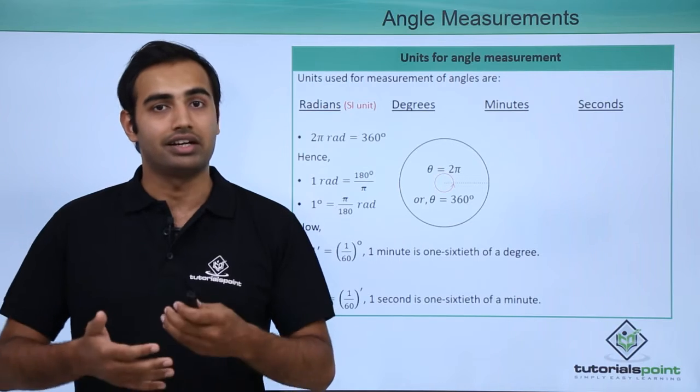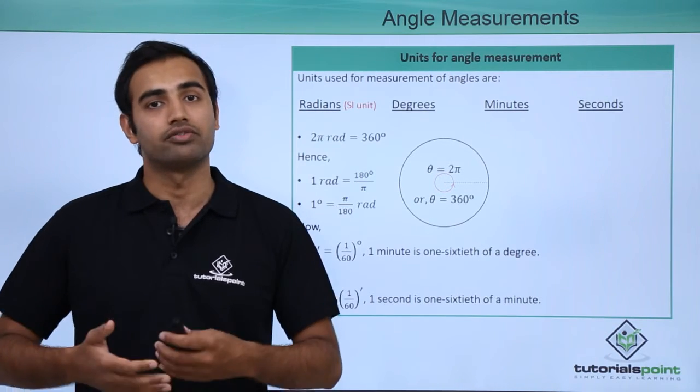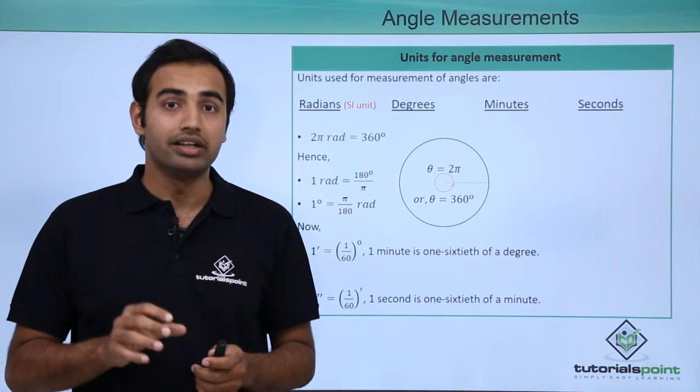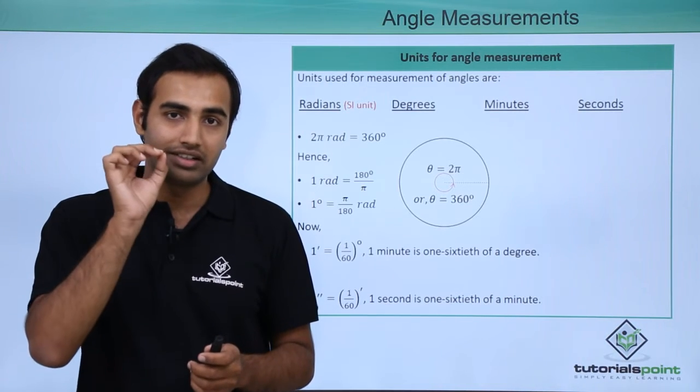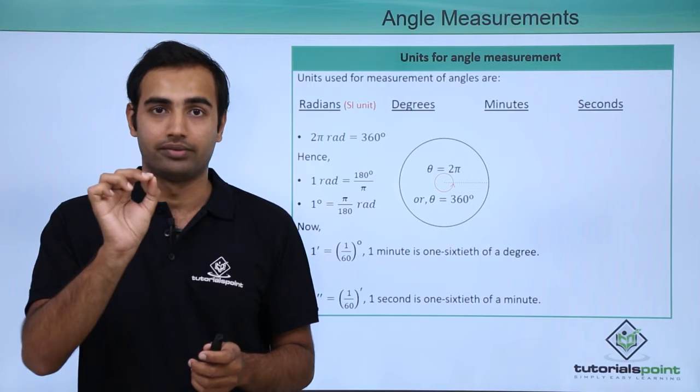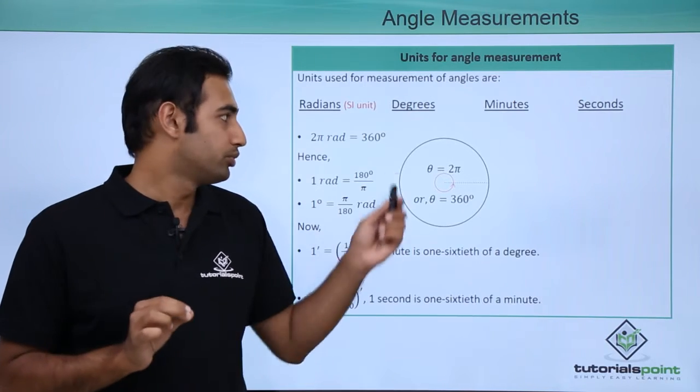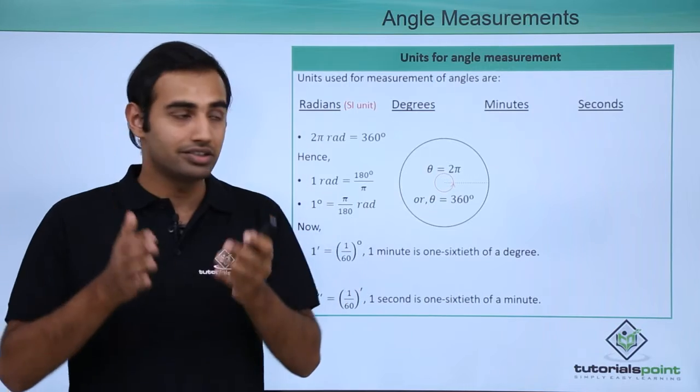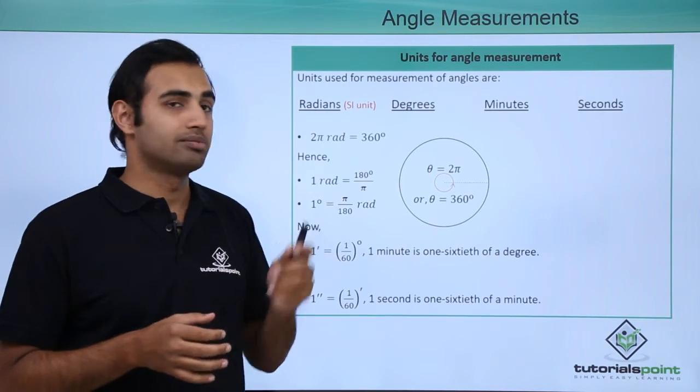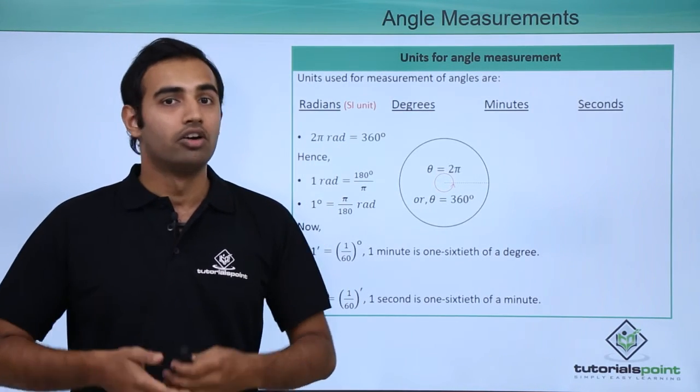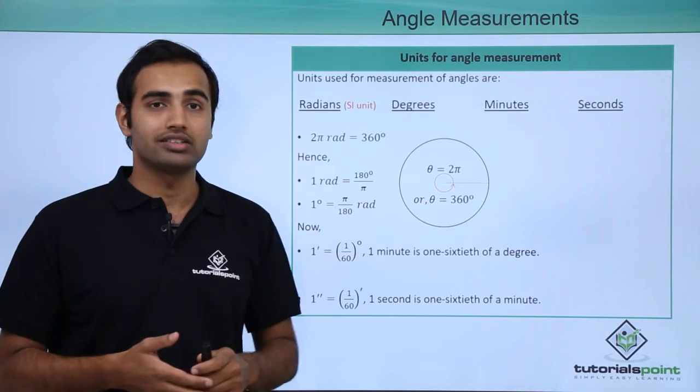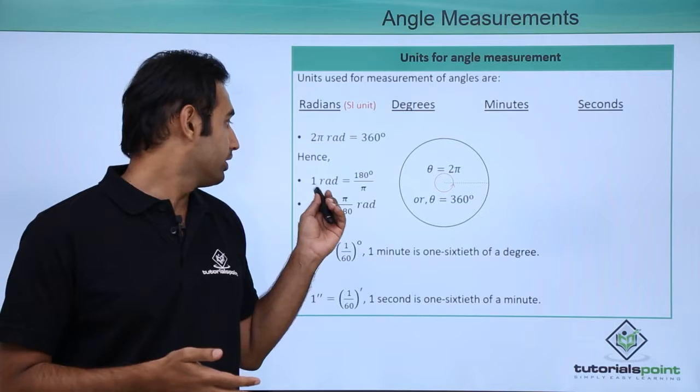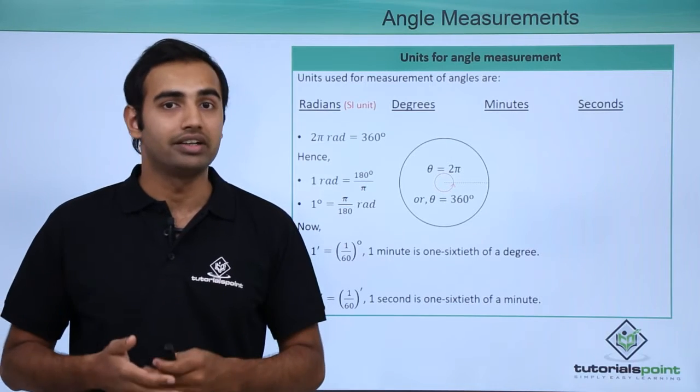We know that when a circle is complete it subtends an angle of 360 degrees at its own center. That angle is also equal to 2 pi radians. So from here I can derive my first relationship that 2 pi radians is simply 360 degrees. From here I get 1 radian is simply 180 degrees by pi or 1 degree is simply pi by 180 radians.